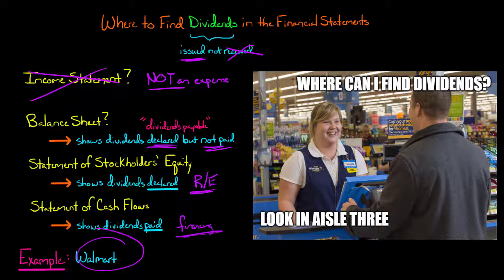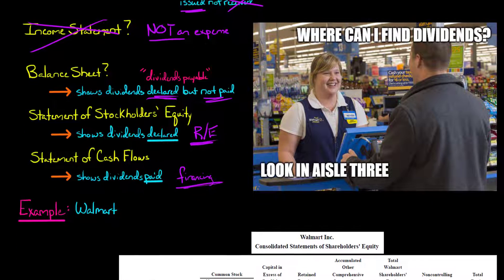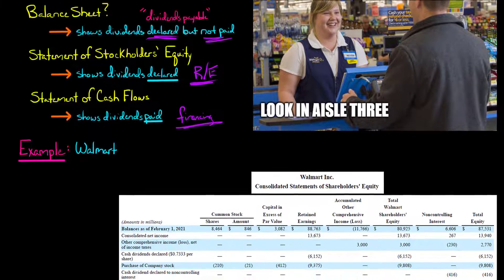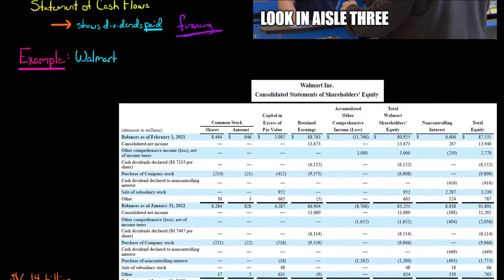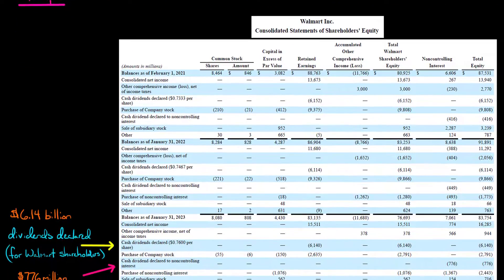In short, if the company declares and pays dividends, you're going to see this in the statement of stockholders' equity and the statement of cash flows. You will only see it on the balance sheet if the company has declared dividends but has not yet paid them. We're going to do an example for Walmart — Walmart did not have dividends payable on the balance sheet because all the dividends it declared had been paid by the time it issued its financial statements.